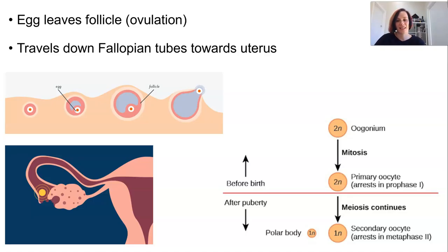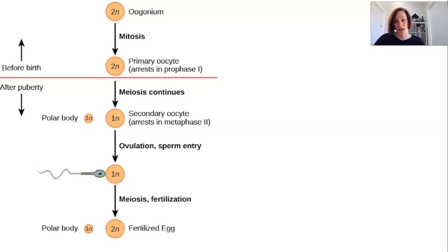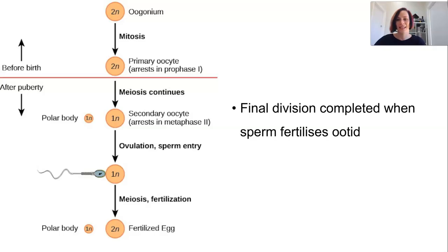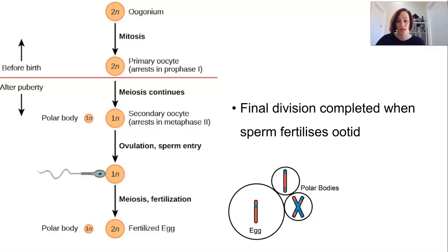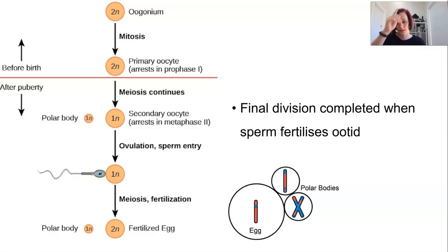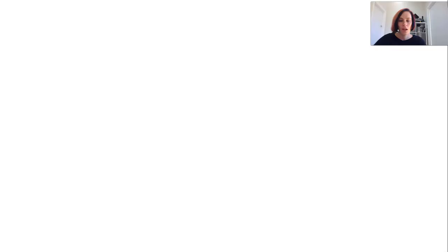The secondary oocyte will never complete its second division if there's no sperm to fertilize it. If sperm is present, it continues with meiosis — once the sperm fertilizes it, the second division immediately finishes. Again, there is an uneven distribution of cytoplasm, creating another polar body. The original polar body can also undergo this division, so oogenesis can produce two or three polar bodies. At the end, we have one comparatively large ootid and two or three little polar bodies.